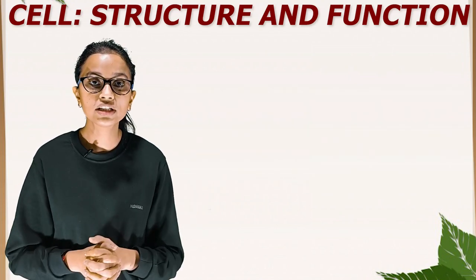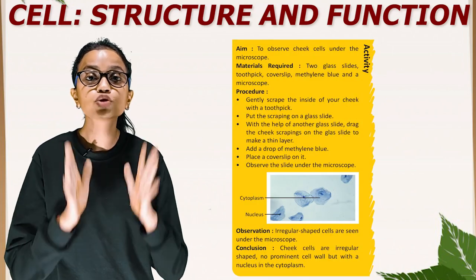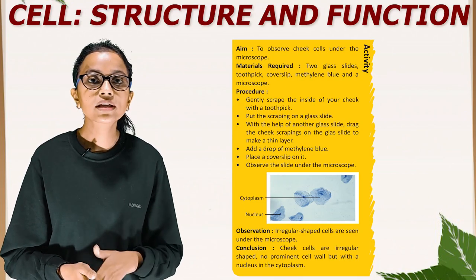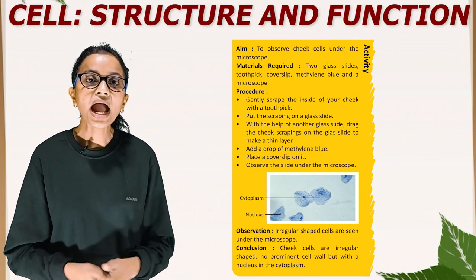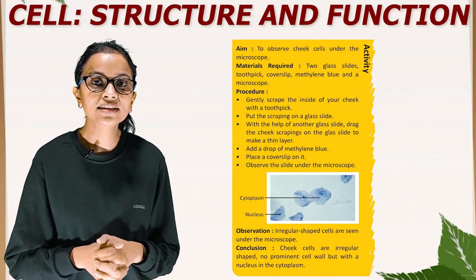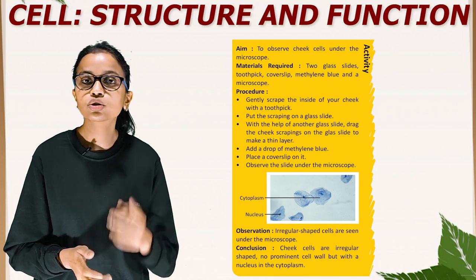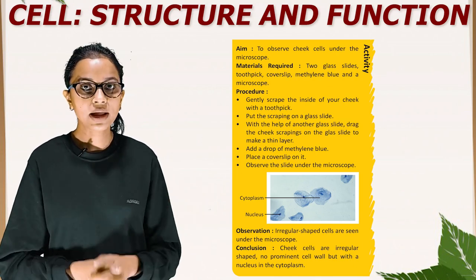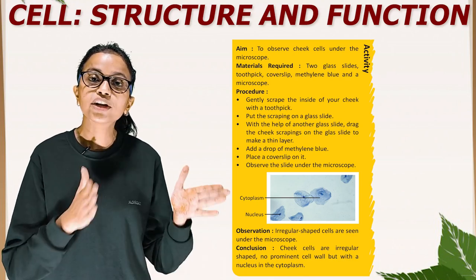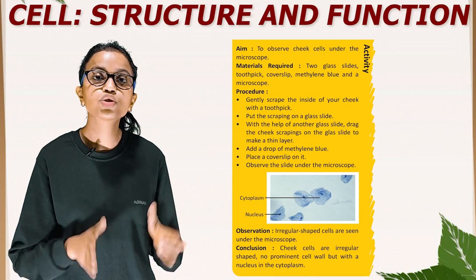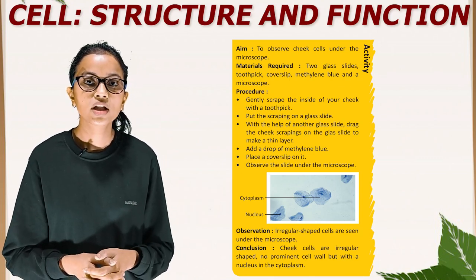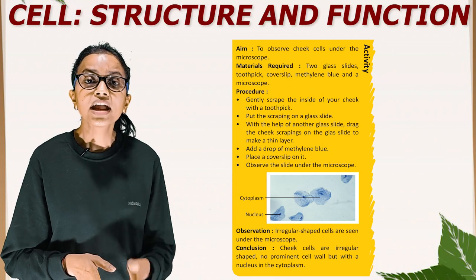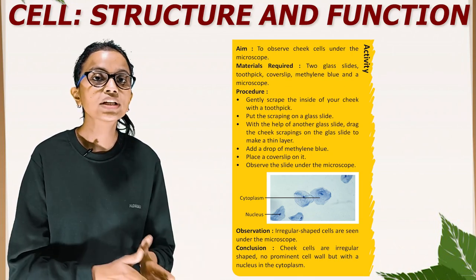There is another activity. Aim — to observe the cheek cell under the microscope. Materials required: two glass slides, one toothpick, cover slip, methylene blue, and a microscope. Procedure: Gently scrape the inside of your cheek with a toothpick. Put the scraping on a glass slide. With the help of another glass slide, drag the cheek scrapings to make a thinner layer. Add a drop of methylene blue. Place a cover slip on it. Observe the slide under the microscope. Observation: Irregular shaped cells are seen under the microscope. Conclusion: Cheek cells are irregular shaped with no prominent cell wall, but with a nucleus in the cytoplasm.